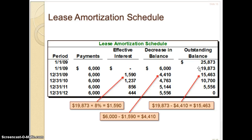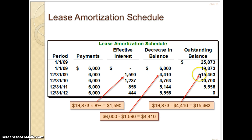Now you start dealing with the interest rate. You take $19,873 at 8%, which gives you $1,590 in interest. Your payment is $6,000. The difference between the two — the decrease in the outstanding balance — is $4,410. So $19,873 minus $4,410 gives you $15,463. This is the same type of amortization table you've been looking at; the only difference is this initial payment on day one.